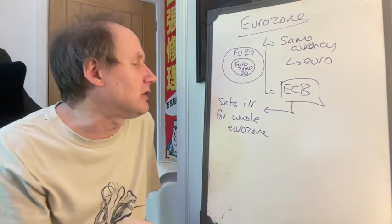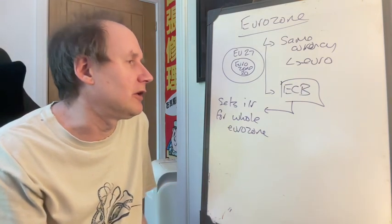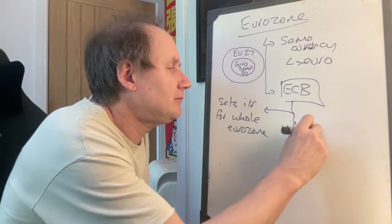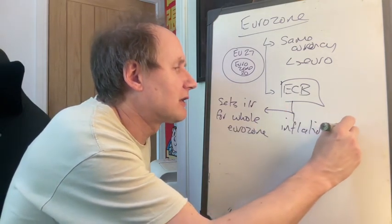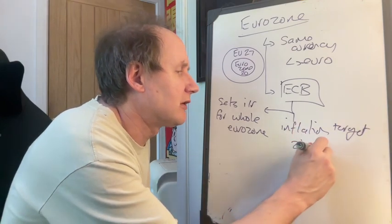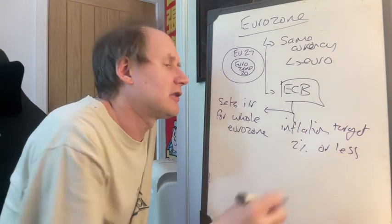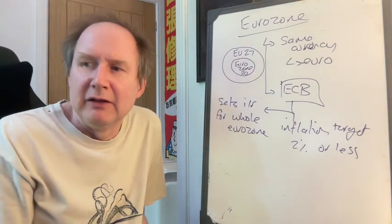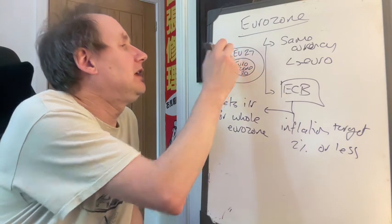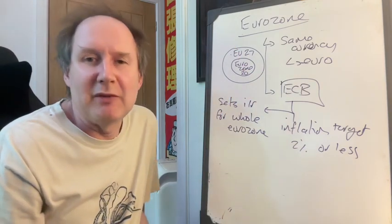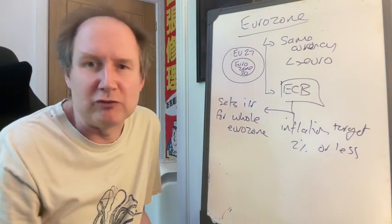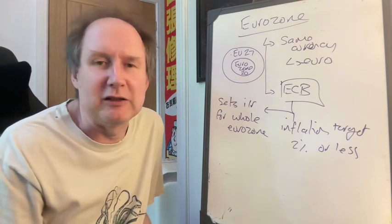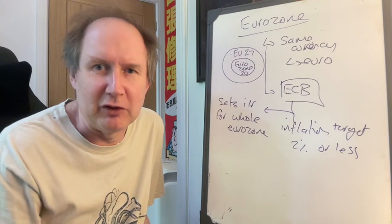The European Central Bank is in charge. It sets interest rates for the whole Eurozone, and it has an inflation target — similar but not quite the same as that of the Bank of England — which is 2% or less. So it's a strongly anti-inflationary organisation. In principle, the other members of the EU — the remaining seven — are supposed to join once they've hit the convergence criteria, of which more later. But it's quite easy to avoid hitting those criteria if you don't want to.